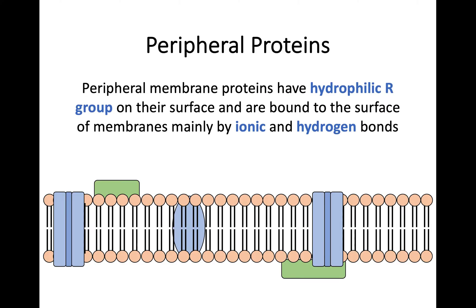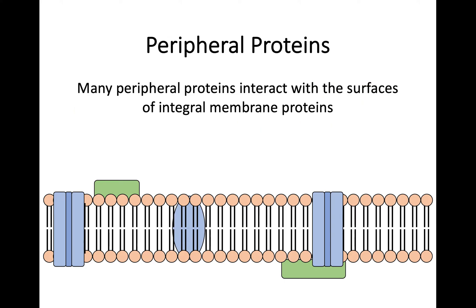In terms of peripheral proteins, these are on the outside. So because these membrane proteins are on the outside of the cell membrane, they are going to have hydrophilic R-groups on their surface, and they bind to the surface of these membranes mostly through ionic and hydrogen bonds. They're shown in this diagram in green. A lot of these, like you may see in the bottom right of this diagram, are actually going to interact with the surface of integral membrane proteins. So if you have to identify one in a diagram, don't be confused if they look like they're latched on to the end of an integral protein — they're still on the outside and they're still a peripheral protein.